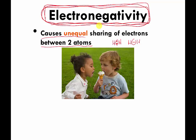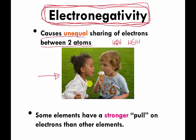Different atoms can hog electrons, even though they're sharing. They might share electrons with another atom, but they don't share equally. The amount of unequal sharing depends on how electronegative the atom is. Another way of saying this is that some elements have a stronger pull on electrons than other elements. Electrons have an electrical charge of minus one — a negative electrical charge — and that's going to be important in a little bit.